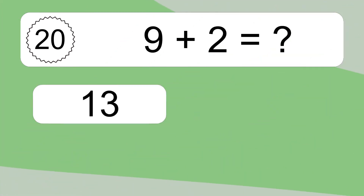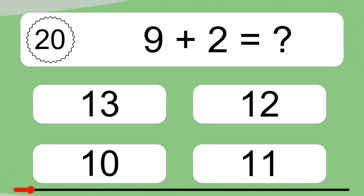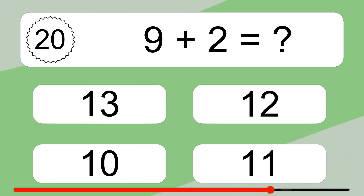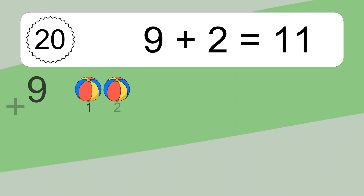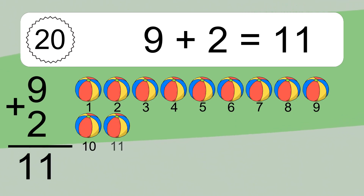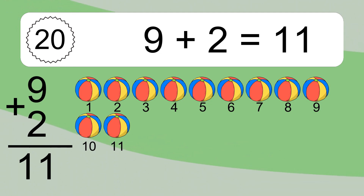9 plus 2 equals what? 9 plus 2 equals 11. Let's count it. 1, 2, 3, 4, 5, 6, 7, 8, 9, 10, 11.